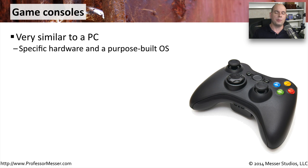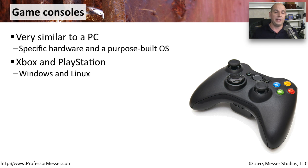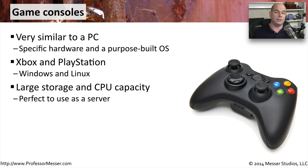One of the favorite static operating environments is that of a game console. This is almost like running a personal computer right next to your television. For something like Xbox and PlayStation, we really are running versions of Windows and Linux on these devices. They have storage capabilities, advanced graphics and display capabilities, and very powerful CPUs inside of them. If you weren't running one as a game device, it would make a very good file server.